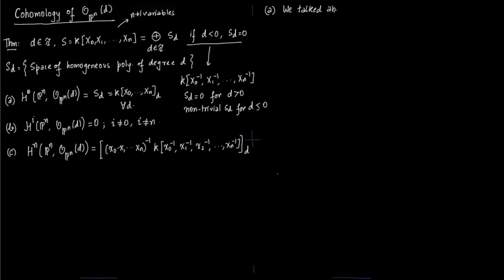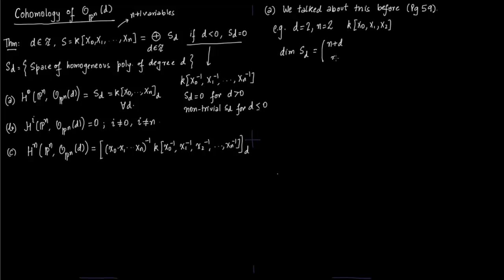This is just the space of homogeneous polynomials of degree d, as in Daniel Perrin's algebraic geometry text. For example, if d = 2 and n = 2, we are talking about the space k[x0, x1, x2]. The dimension of S_2 is C(n+d, d) = C(2+2, 2) = 6. So this space has basis: x0², x1², x2², x0x1, x1x2, x0x2. This forms the basis of H^0(P^2, O_{P^2}(2)).